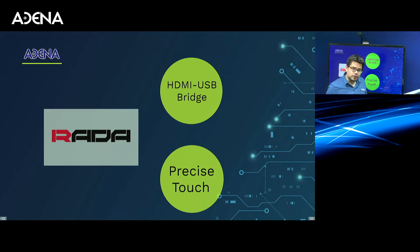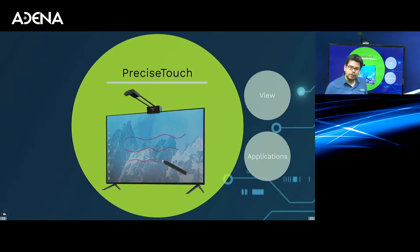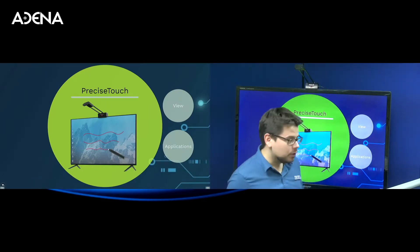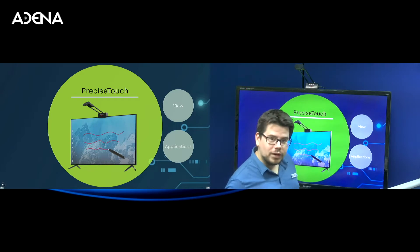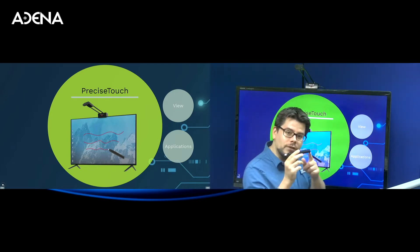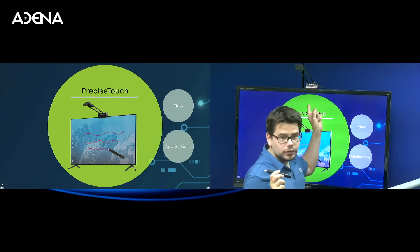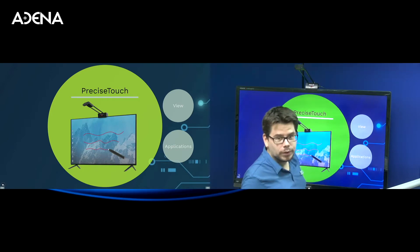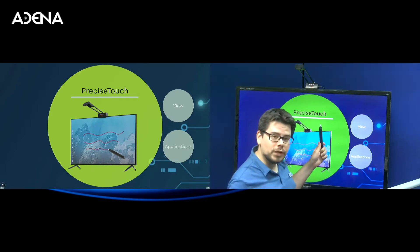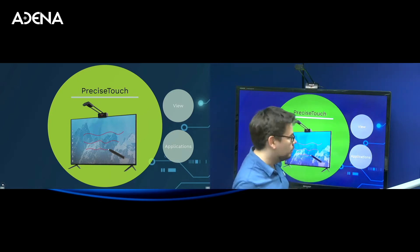As for the second product, it is Precise Touch and it's an interactive module that allows you to convert your displays and your whiteboards and make them interactive. As you can see, I'm actually already using it. I have a Precise pen in my hand, and there is a Precise Touch module on top of this display. It's a regular screen, and I'm just making it interactive by adding this module.